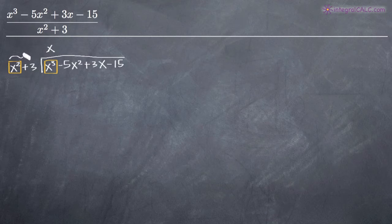And then, whatever we write on top, we're going to take and multiply through the polynomial out in front here. So x times x squared gives us x cubed and then we're going to write these in order. And then x times positive 3 gives us a 3x.